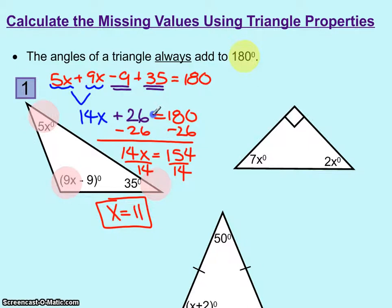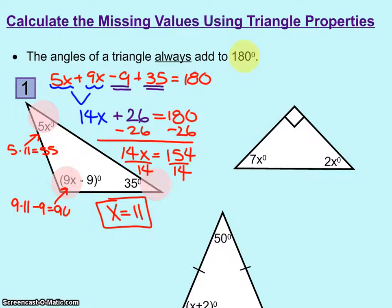If you wanted to find the measure of each of those angles to classify this triangle, you would take 11 and plug it in. This angle would be 5 times 11, which would be 55. This angle would be 9 times 11 minus 9, which equals 90 degrees. And this third angle we already know is 35 degrees. This triangle would be a right triangle because of the 90 degrees.